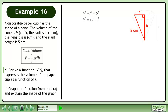The triangle gives us h squared plus r squared equals 5 squared. Subtract r squared from both sides of the equation to get h equals plus minus the square root of 25 minus r squared.